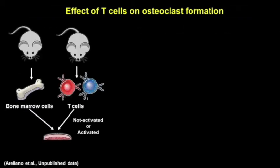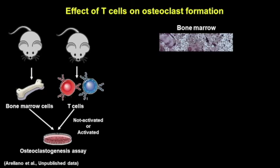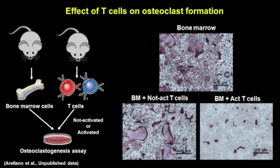To confirm this, we used an ex vivo osteoclastogenesis assay, in which we added T cells to a bone marrow culture. Indeed, adding T cells increased the amount of osteoclasts, as in mice, but only when they were not activated. In sharp contrast, when T cells were activated before the assay — as immunotherapy aims to do — they inhibited osteoclast formation.